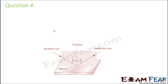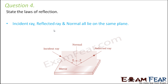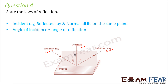Question number four: state the laws of reflection. The first law is that the incident ray, reflected ray, and normal all lie in the same plane. The second law is that the angle of incidence will be equal to the angle of reflection.